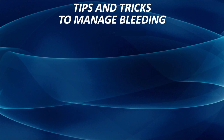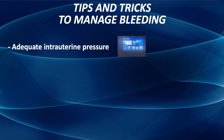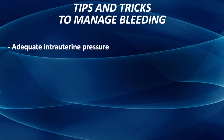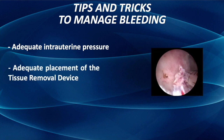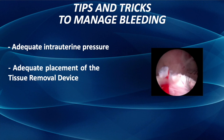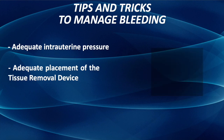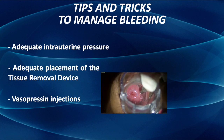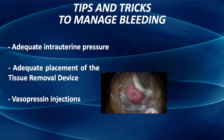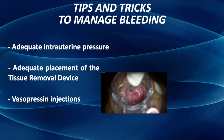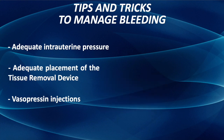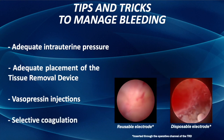How to minimize bleeding during a hysteroscopic procedure? Here are some suggestions: 1. Use of adequate intrauterine pressure using an automatic fluid management system. 2. Adequate placement of the tissue removal device — take advantage of the aspiration system by positioning the blade against pathology, avoiding excessive suctioning that decreases intrauterine pressure. 3. Cervical injection of vasopressin — it significantly decreases surgical bleeding, but is associated with side effects. 4. Selective coagulation of active bleeders.